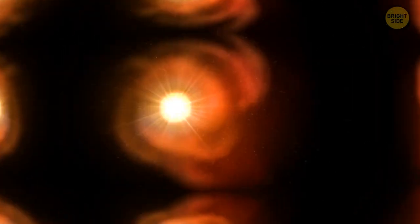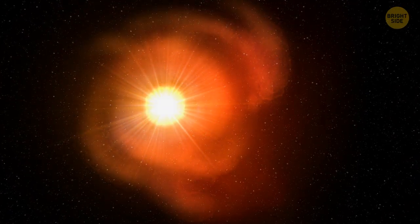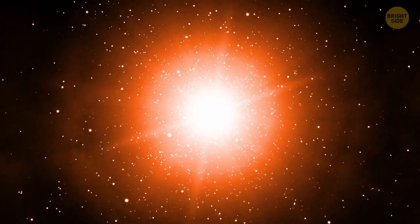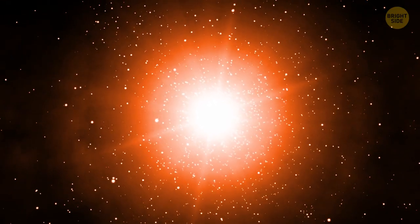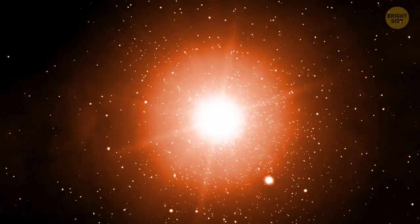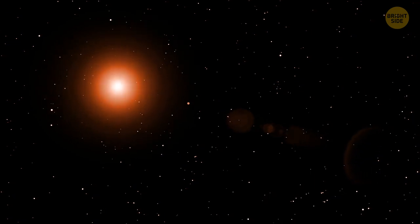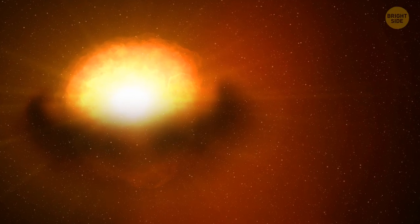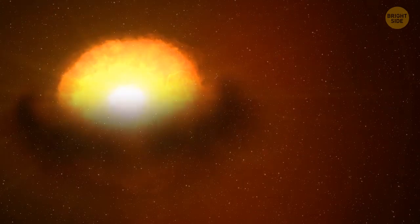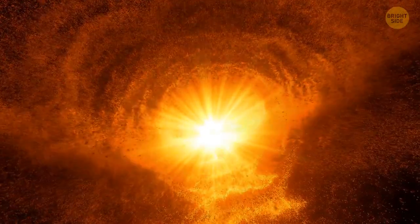It may be because Betelgeuse is classified as a semi-regular variable star, which sounds kind of redundant to me. Its approximately 400-day cycle of pulsation changes its brightness by about one full magnitude, going from much brighter than a first-magnitude star to closer to a second-magnitude star. But never was Betelgeuse observed to dim so rapidly or so drastically as it did recently. So what's going on with it?